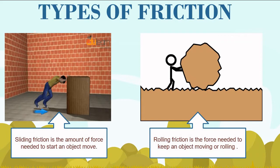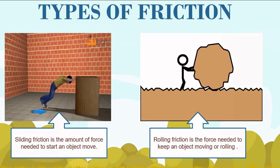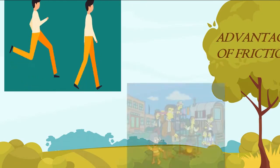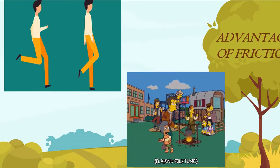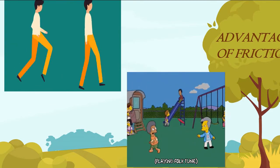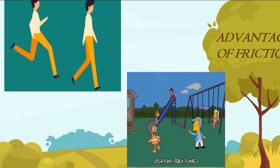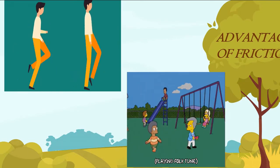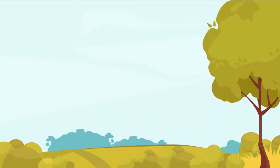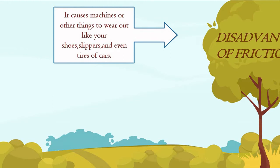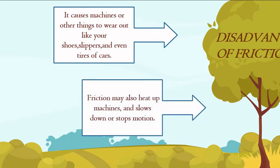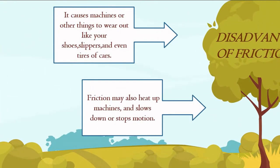Friction is both an advantage and a disadvantage. We cannot walk, run, or play without having friction. It is much easier to slide on something smooth like ice than on a rough surface. This is because rough surfaces create more friction than smooth ones, and friction slows things down. If there is no friction, it would make motion very difficult to control. However, too much friction becomes a disadvantage and causes harm. It causes machines or other things to wear out, like your shoes, slippers, and even tires of cars. It makes work harder because more force is needed to finish the work. Friction may also heat up machines and slow down or stop motions.